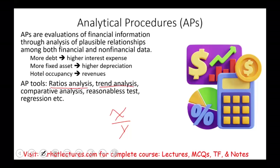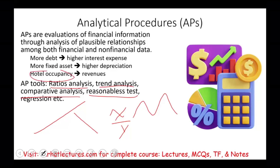Trend analysis is looking for a trend over time — for example, over a five-year period, is gross profit going up, going down, or fluctuating? Comparative analysis is comparing balances from year to year. The reasonableness test is what we looked at with hotel occupancy — if occupancy rate in the area is higher and our hotel is located there, we should have higher occupancy and more revenue. We also have regression and many other tools.